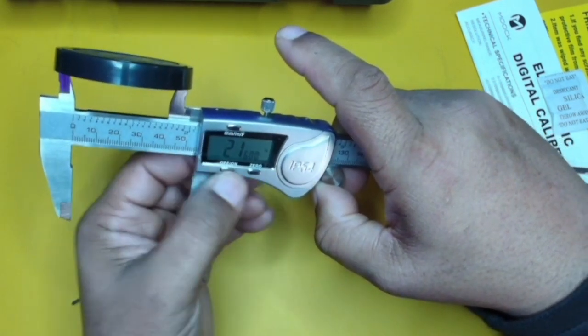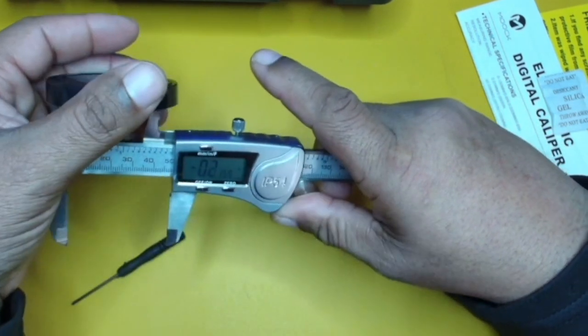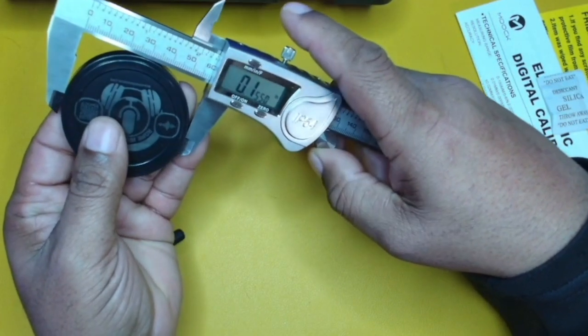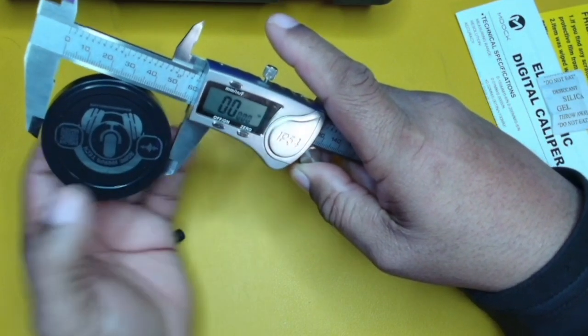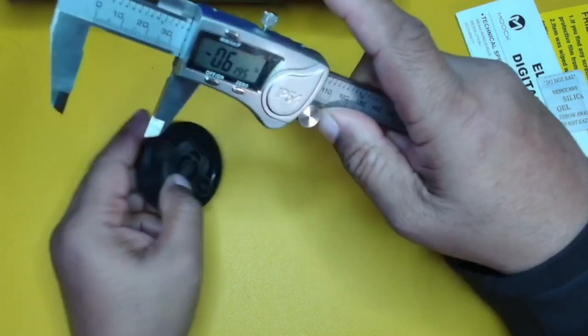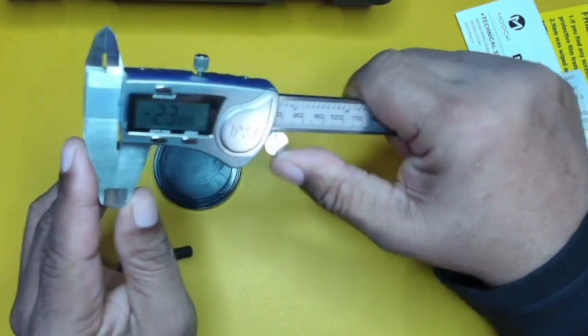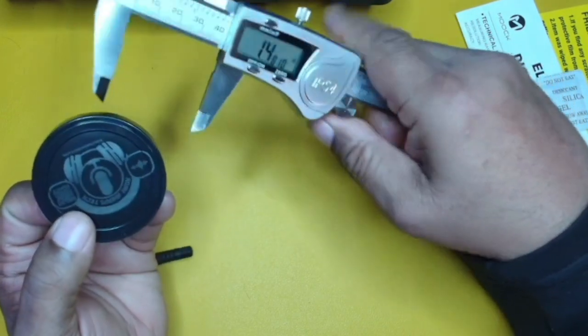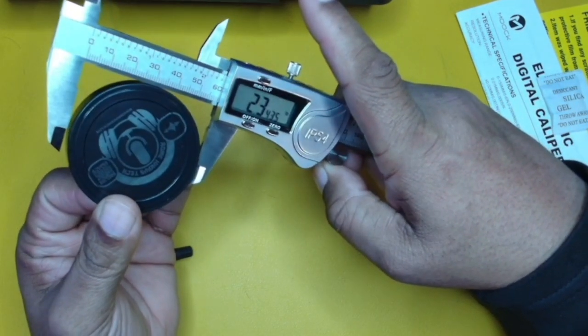And then if we wanted to, let's just zero that out again. And then we're going to measure the outside of the cap like so. Let me zero that out. Okay, let's zero it out. And then we're going to measure like that.